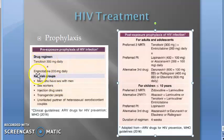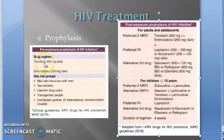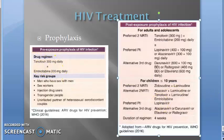For pre-exposure prophylaxis, the regimen is tenofovir plus emtricitabine. For post-exposure prophylaxis, such as after a needle-prick injury, you give tenofovir plus emtricitabine plus a PI — lopinavir or atazanavir with low-dose ritonavir. So it is tenofovir plus emtricitabine plus one PI. We are not focusing on doses for now.